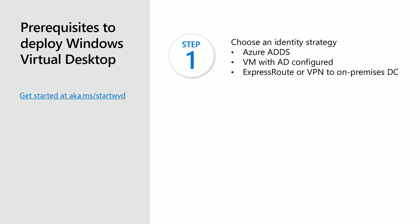You have a few options. One is using Azure ADDS—think of it as a domain controller as a service. You spin it up, it runs 24/7, and you domain join your VMs to Azure ADDS. The second option is spinning up a VM, installing Windows Server, and promoting it to a domain controller. The last option—and these can be combined—is using ExpressRoute or VPN to extend your on-premises network to Azure so that a domain-joined virtual machine can find your on-premises domain controller.